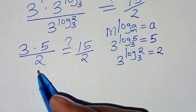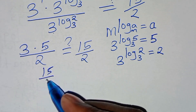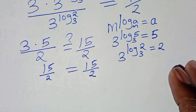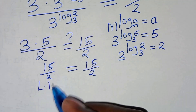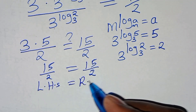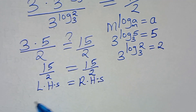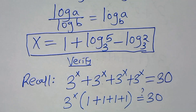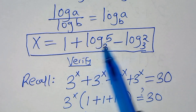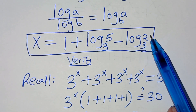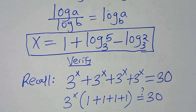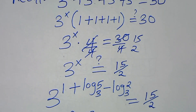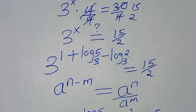So it's true — 5 times 3 is 15, divided by 2. This implies that the left-hand side is equal to the right-hand side, and that shows that the value of x, which is 1 plus log base 3 of 5 subtract log base 3 of 2, actually satisfies the equation. Kindly follow the steps, like this video and subscribe to our channel.